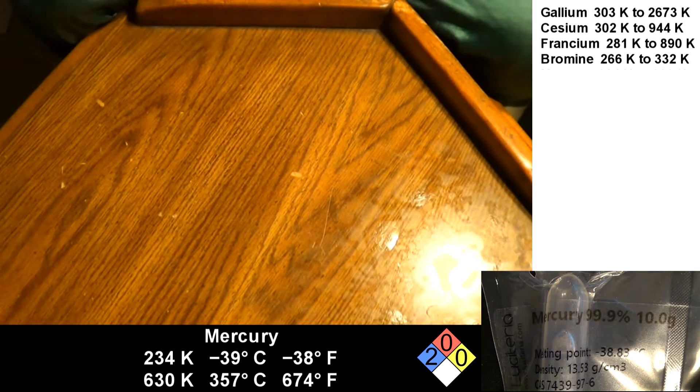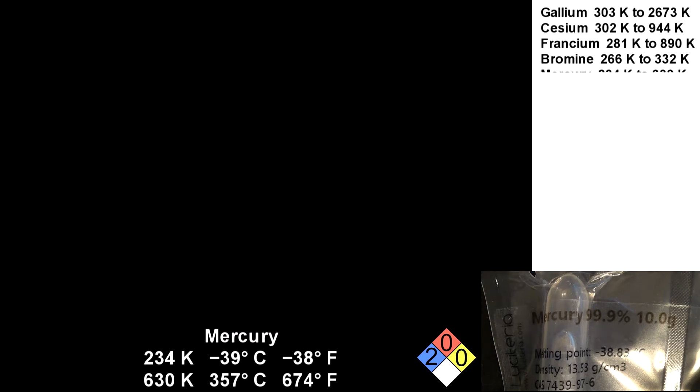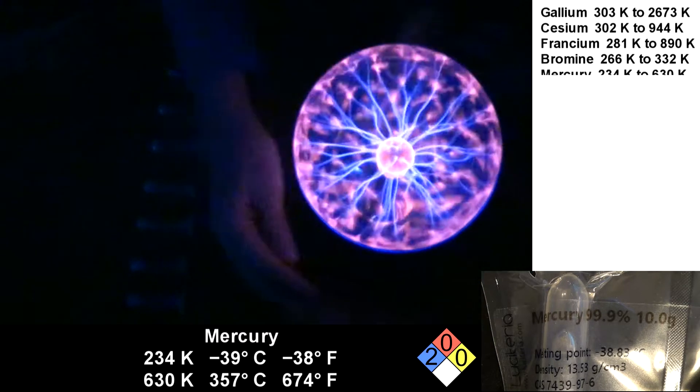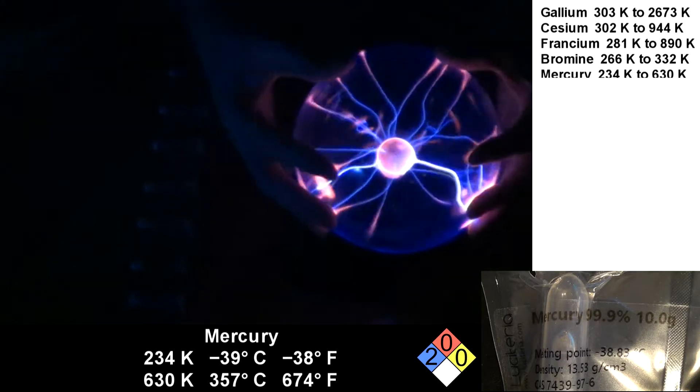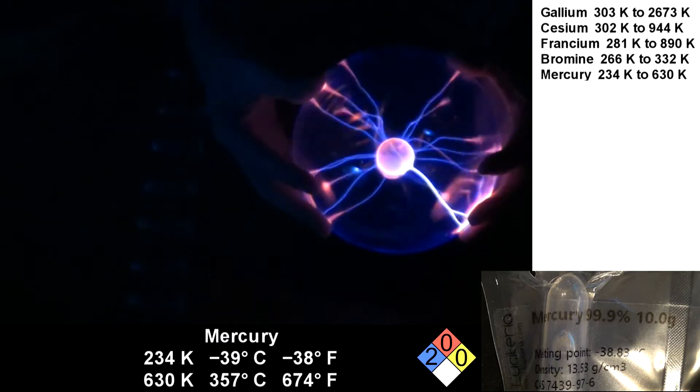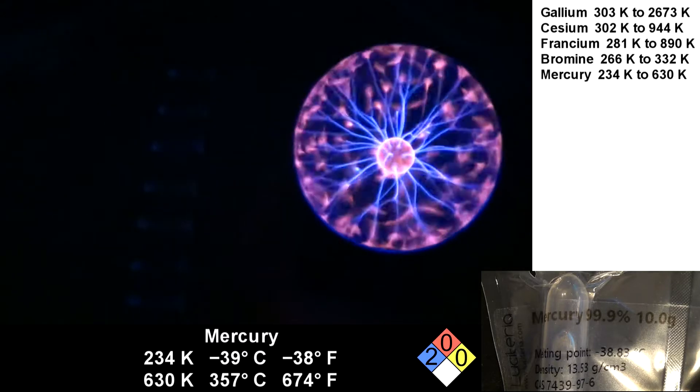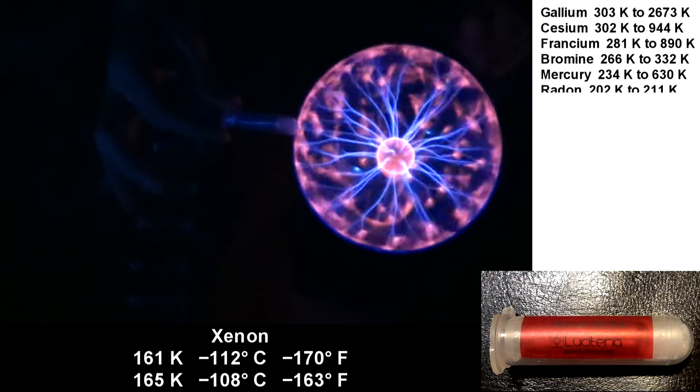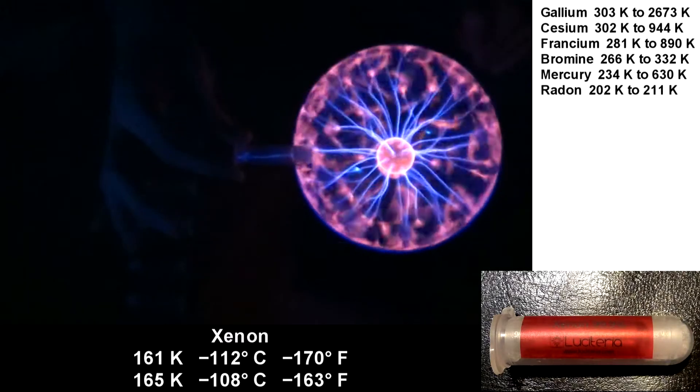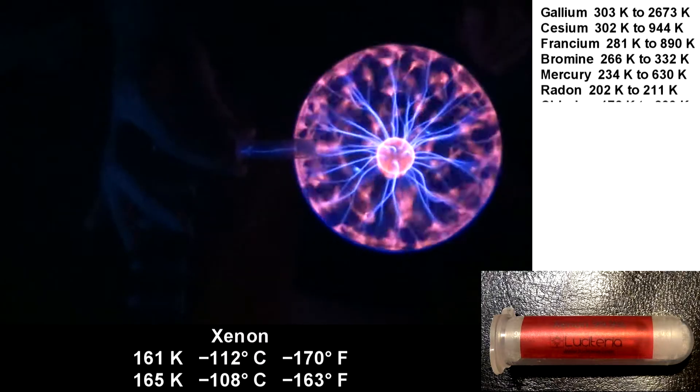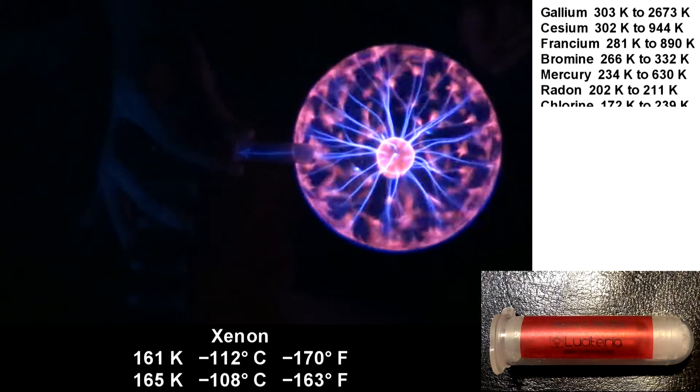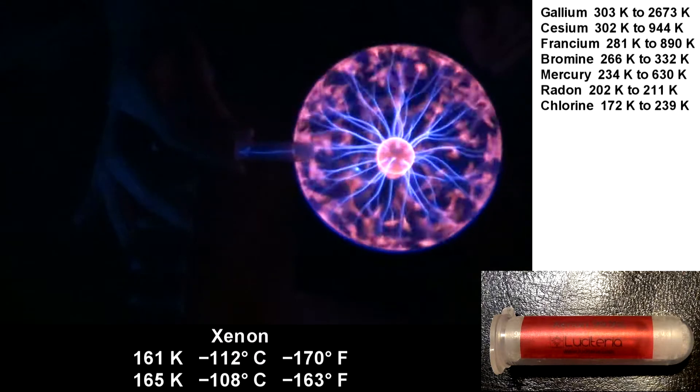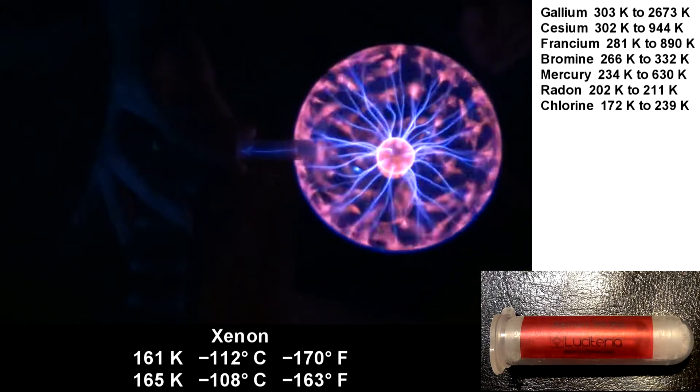The next elements require a special tool in order to see them. This is my globe of science, also known as a plasma ball. Xenon is first up. When you place it next to the plasma ball, it lights up. It's a liquid from 161 Kelvin to 165 Kelvin. Obviously it's a gas right now because this room is way too hot for it to be in liquid form.